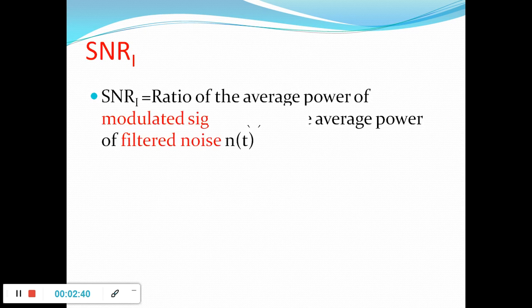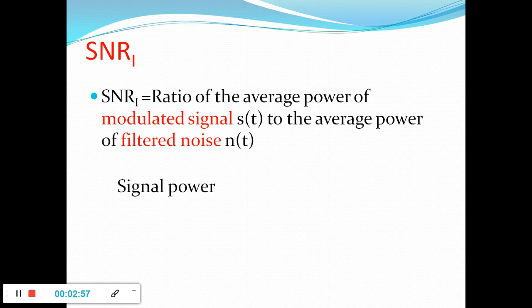Now let us see the SNR at the input. It is defined as the ratio of the average power of the modulated signal to the average power of the filtered noise, both measured at the input of the demodulator. The signal power remains the same, which is equal to C²·Ac²·P divided by 4.